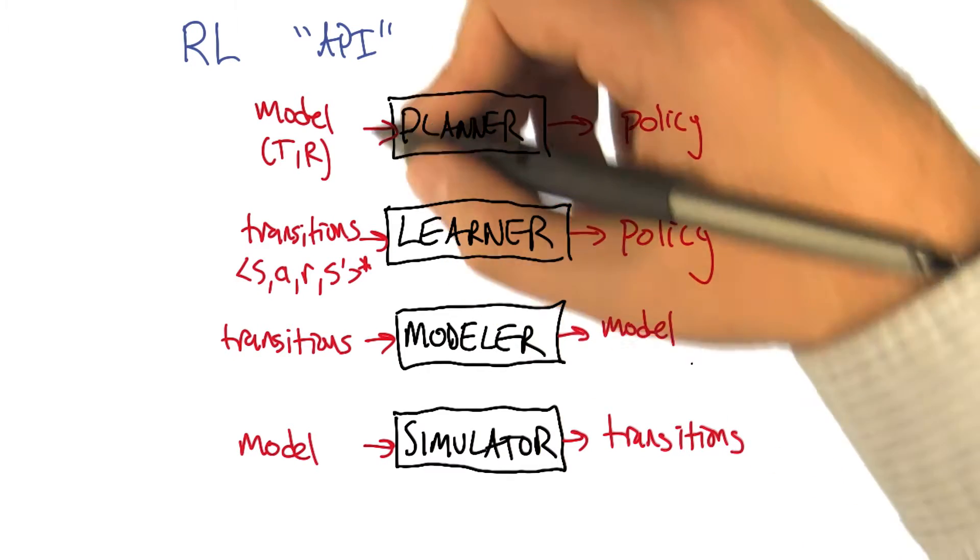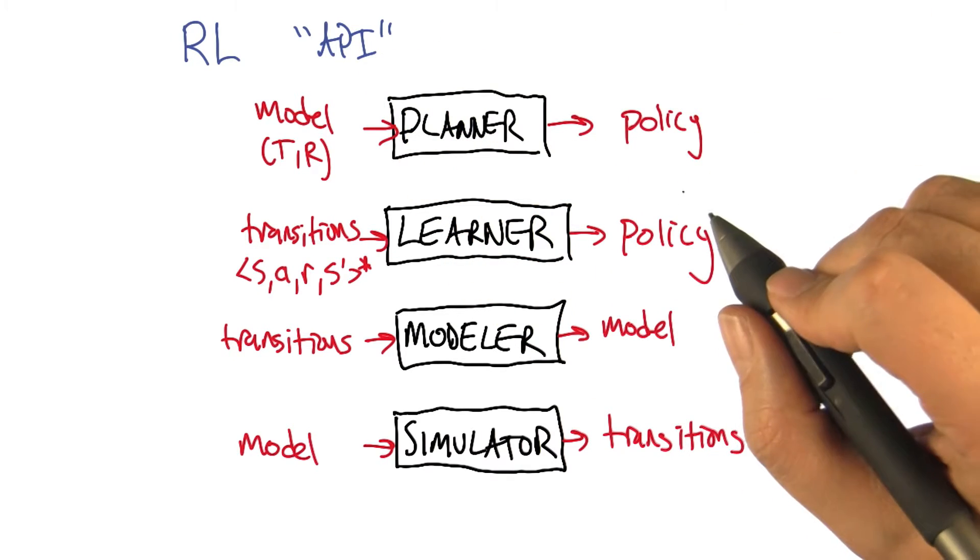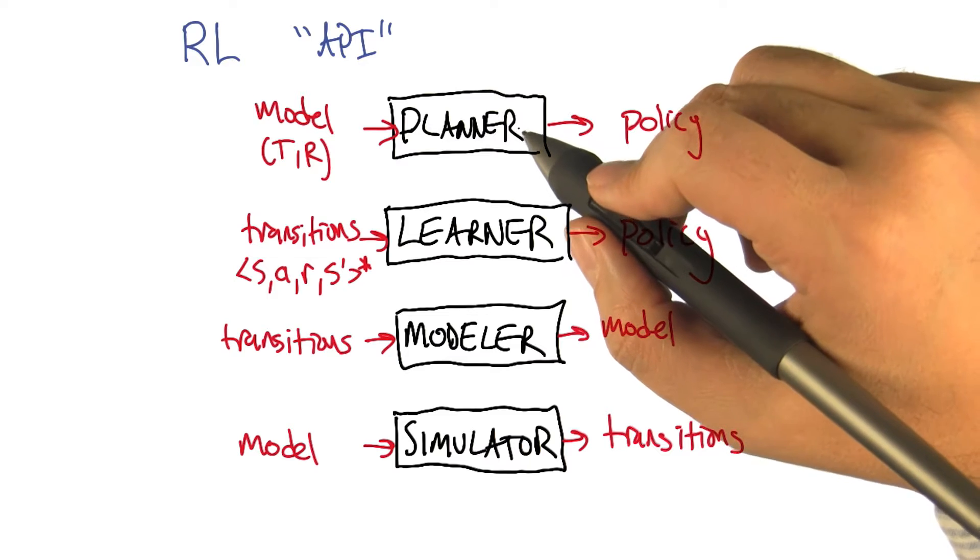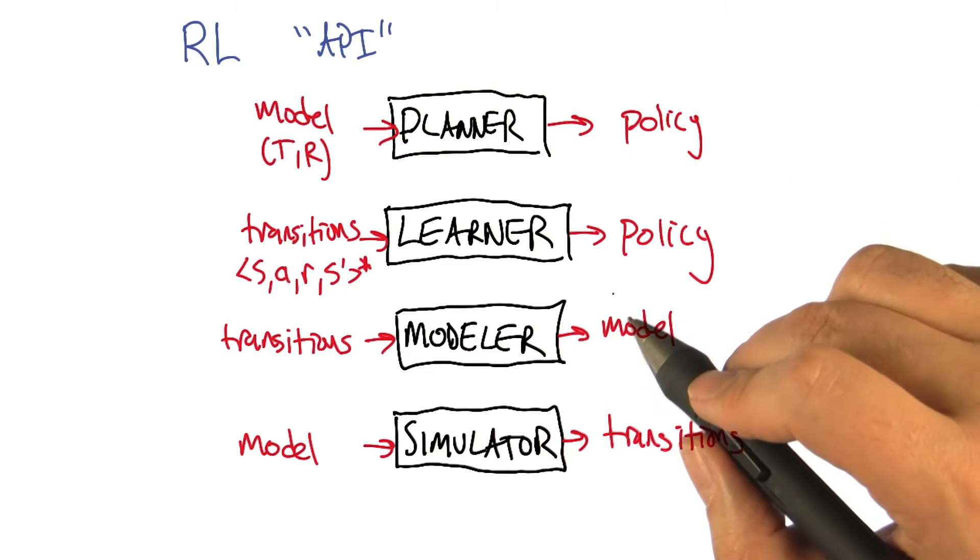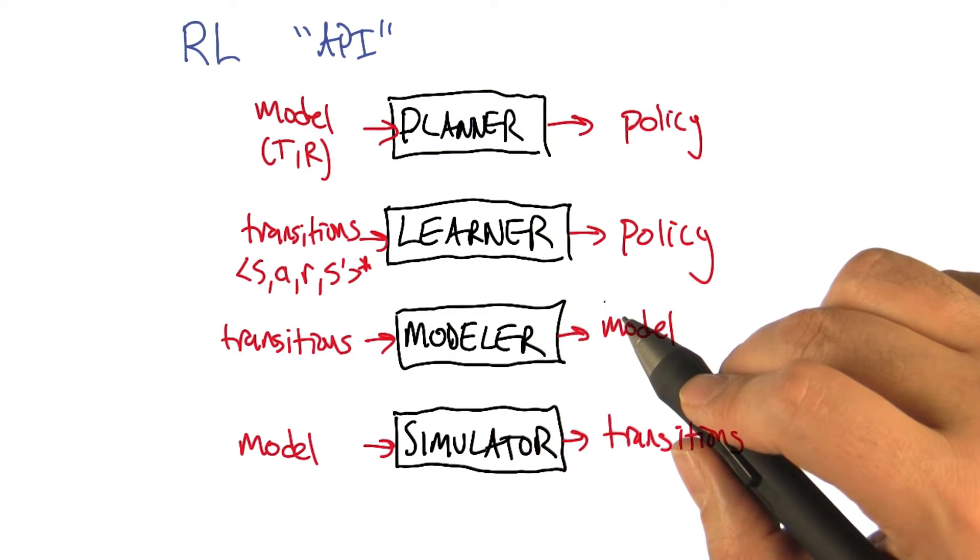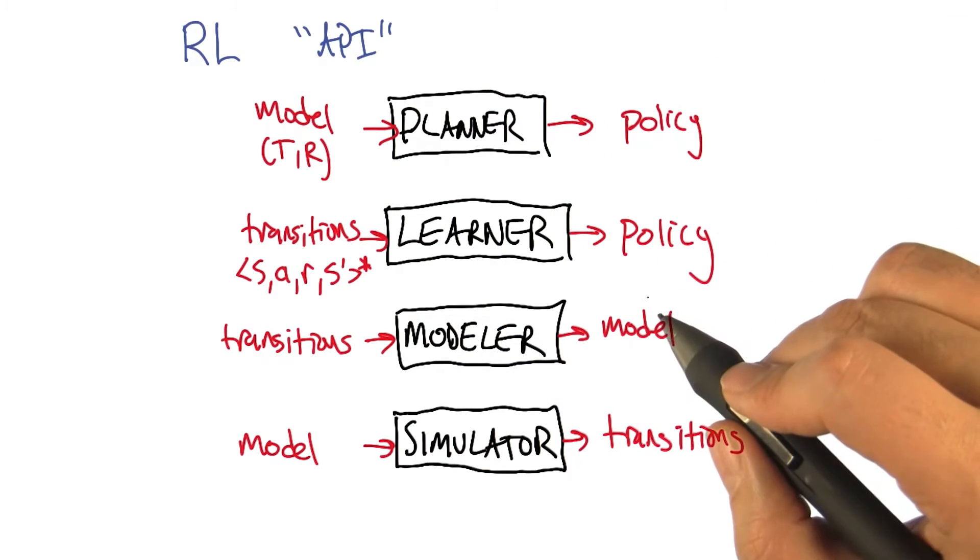All right, so now that we're back from our side discussion, let's go back to thinking about this applications program interface. I talked about planning and learning, and it turns out there are two other sub-processes or sub-components that might be useful to think about that relate these quantities together differently.